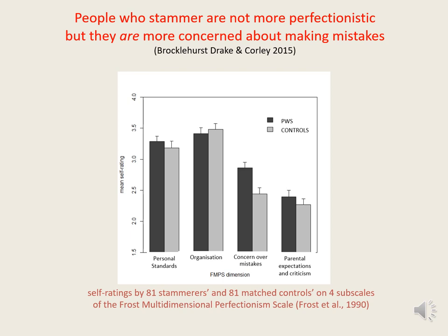What can we conclude from these findings? In a nutshell, they suggest that compared to normally fluent speakers, people who stammer are not more perfectionistic inasmuch as they do not aspire to higher personal standards. They are, however, significantly more concerned about making mistakes. Bearing in mind the findings of the tongue twister experiments, one very plausible explanation is that people who stammer are more concerned about making mistakes primarily because they are more error-prone and thus have a tendency to make more mistakes, including more speech errors, compared to normally fluent speakers.